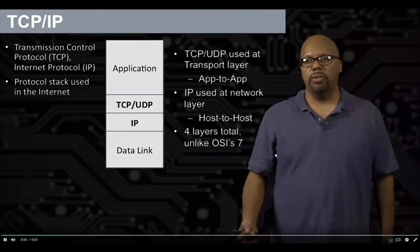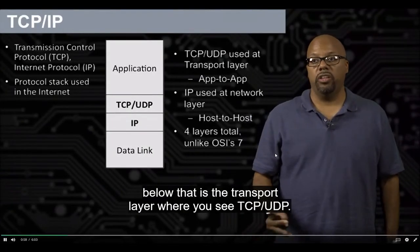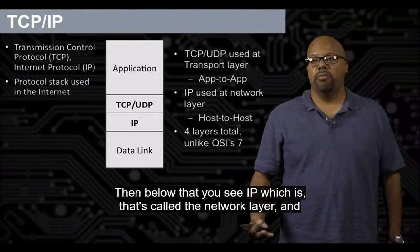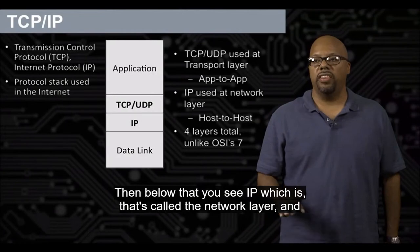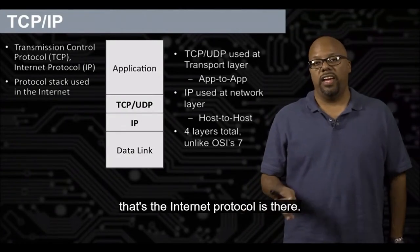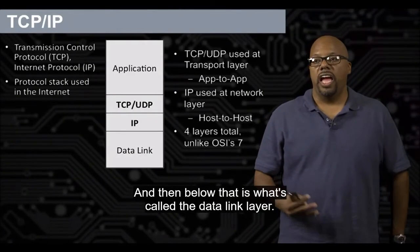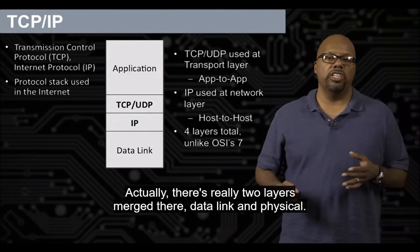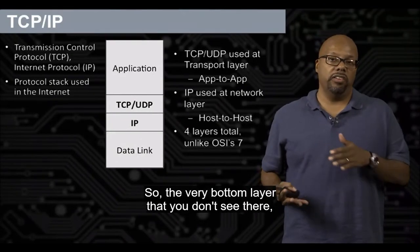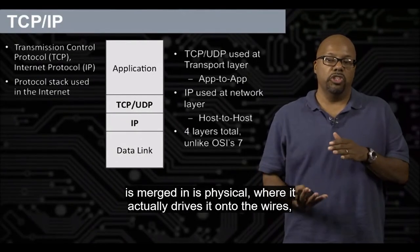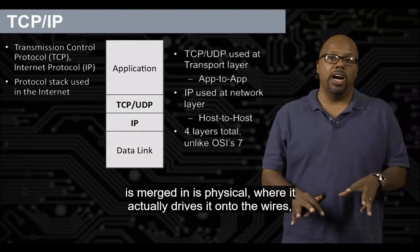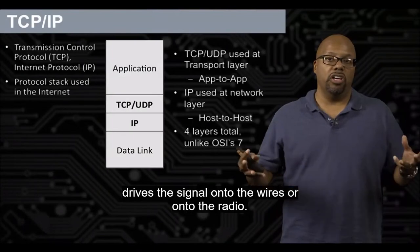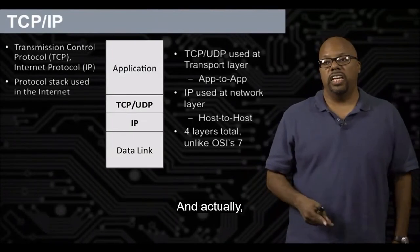The top layer is the application layer. Below that is the transport layer, where you see TCP/UDP. Then below that is IP, which is the network layer — that's the internet protocol. And below that is what's called the data link layer. Actually, there are really two layers merged there: data link and physical. The very bottom physical layer is where it actually drives the signal onto the wires or onto the radio.